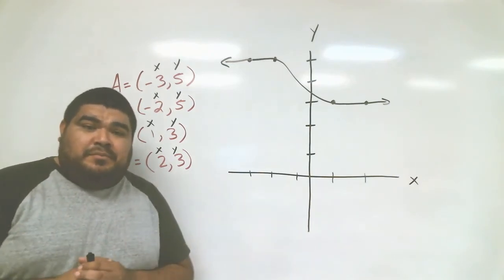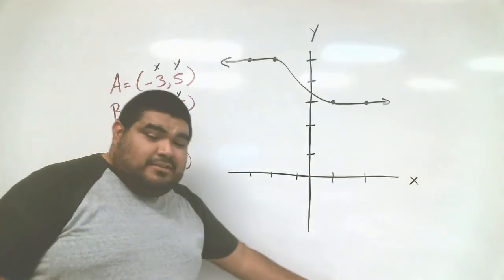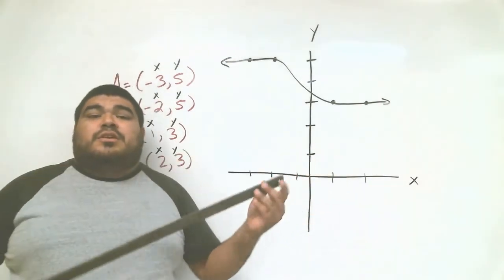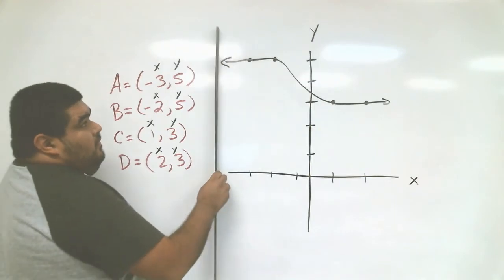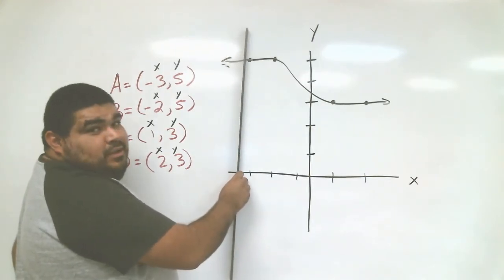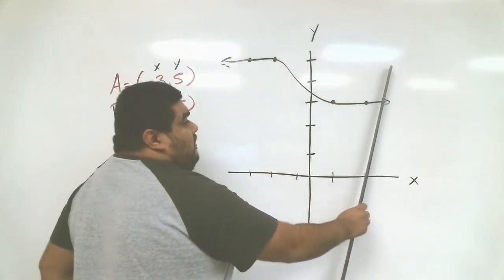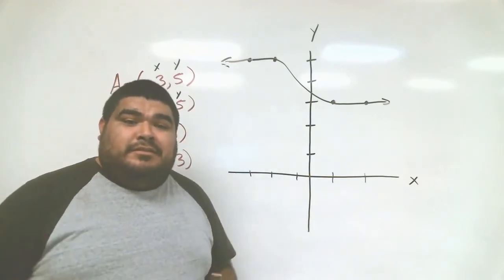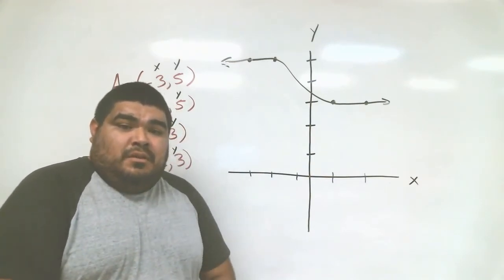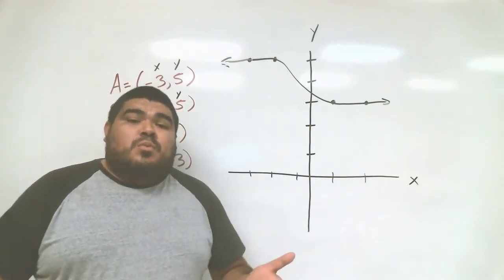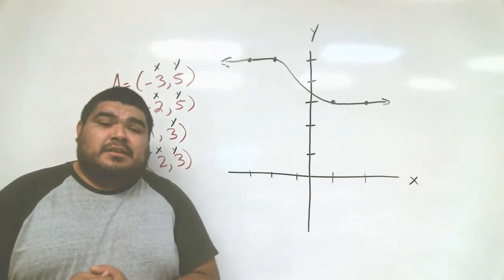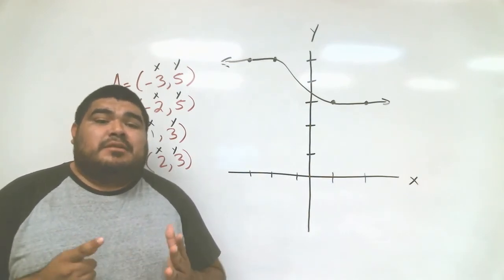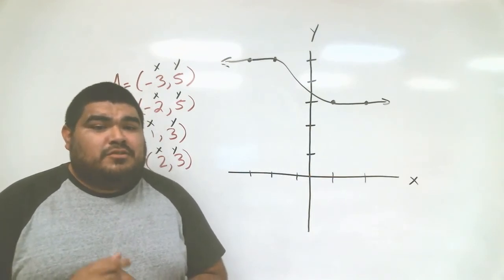Now that we have our shape and all points connected, we take our pencil and do the vertical line test to see if it's a function. Notice that as I move across the graph, the line only touches once throughout the whole graph — so this is a function. The answer is yes, it is a function. Now you know how to graph points and use the vertical line test. Let's get started on the assignment.